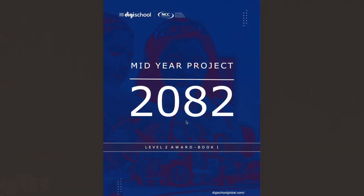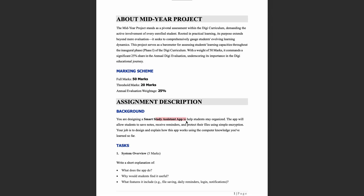Let's start the guidance video for Level 2, Award Book 1. This project has full marks of 50 and pass marks of 20, and it carries 25 percent weightage in your final evaluation.